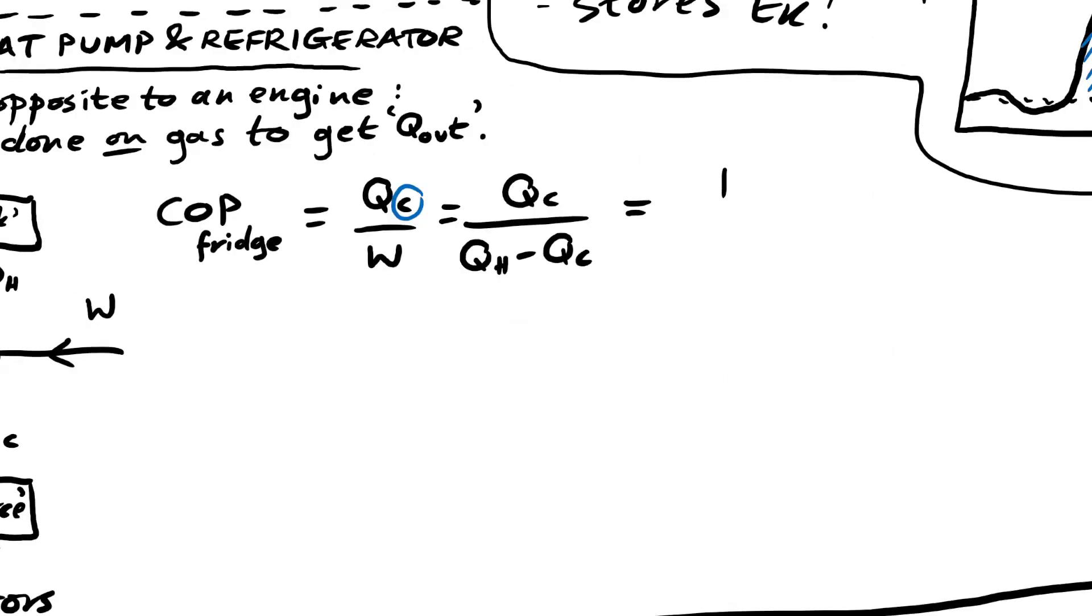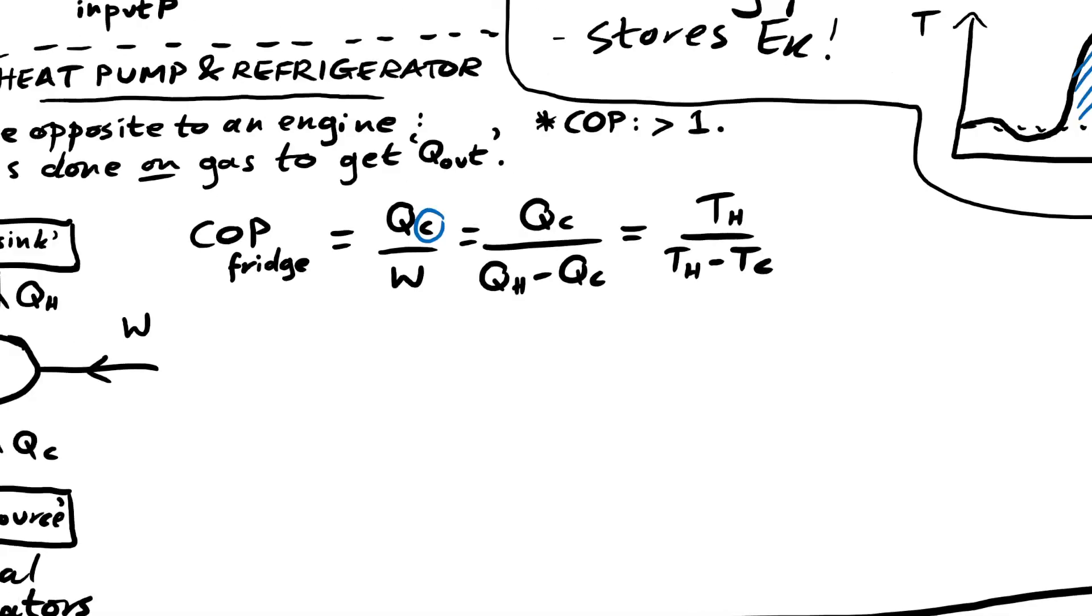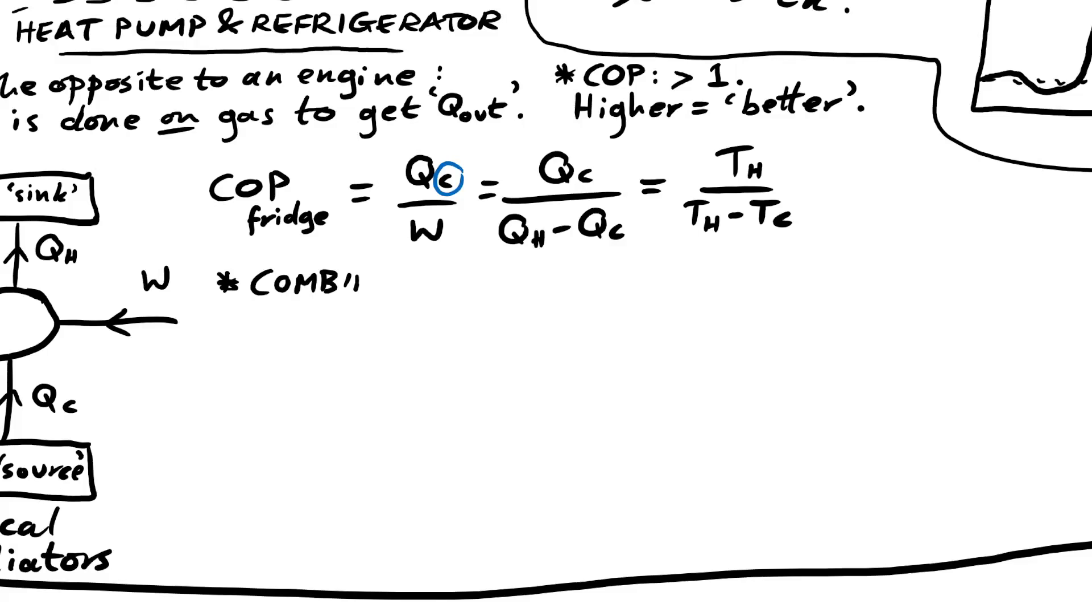For a fridge, however, we're interested in how much energy we're able to take out of the cold space. So therefore it's going to be Q C on top. And hopefully you can see that all coefficient of performances are going to be greater than one. The higher, the better. We can say that the more efficient it is, but we don't really say that. We say that the higher the COP, the more heat you get out relative to the work that you put in. Heat pumps are better because yes, even though we use electricity to drive the heat pump, it's more efficient than actually just using electrical energy to heat a coil or electric heater or something.